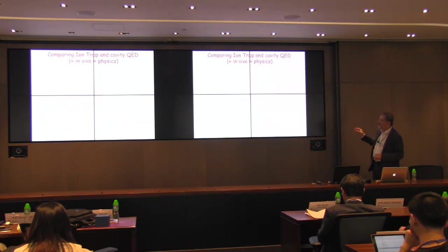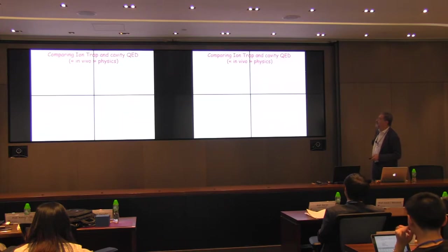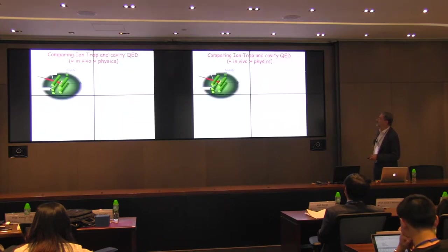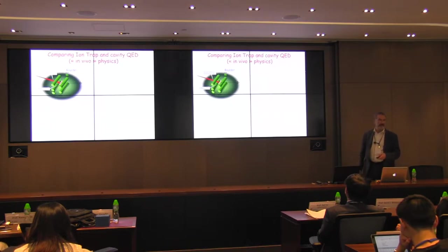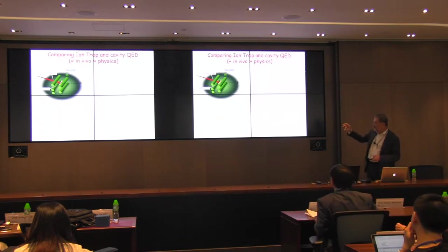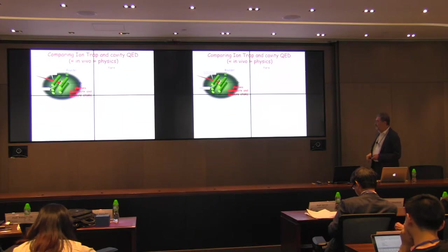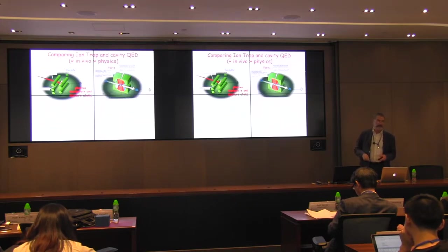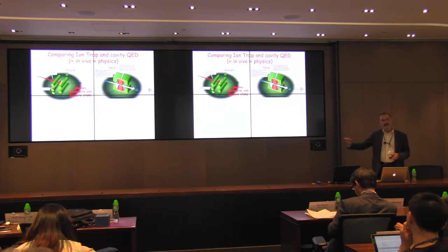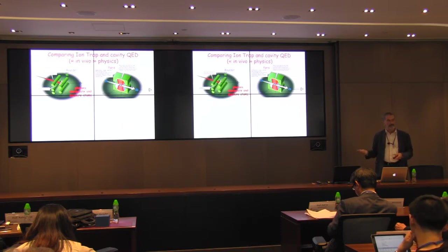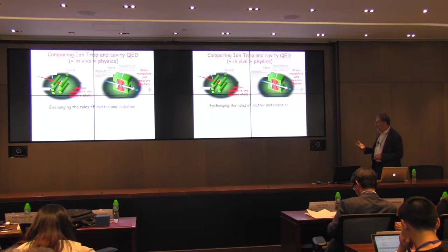This slide is taken from the poster announcing the Nobel Prize in 2012, which compares what is done with ion traps on the left — where ions are held by electrodes, and laser light is used to cool them and record their fluorescence, so photons manipulate and measure the atoms — with our cavity experiment, where it is the opposite: photons are held in a trap, a high-Q cavity, and atoms are sent across the trap to manipulate the photons and extract information.